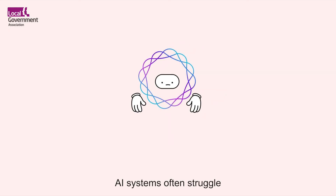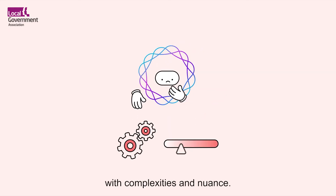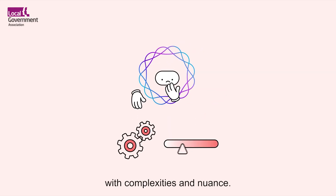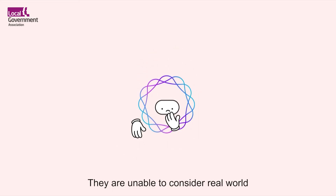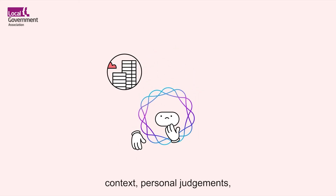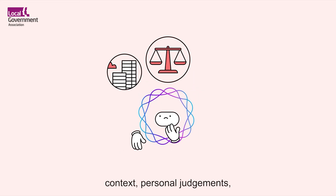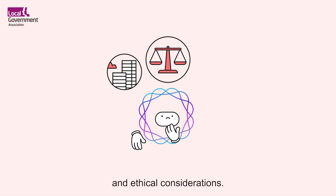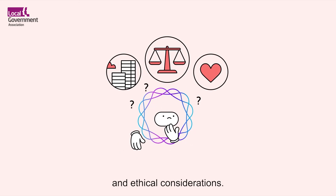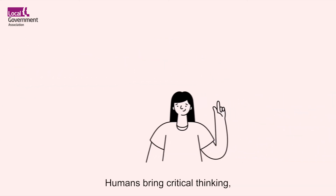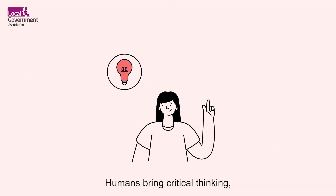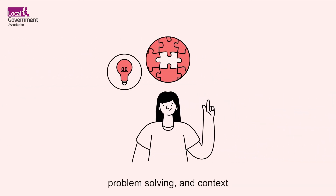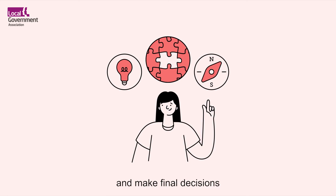AI systems often struggle with complexities and nuance. They are unable to consider real-world context, personal judgments and ethical considerations. Humans bring critical thinking, problem solving and context that can better navigate and make final decisions on complex issues.